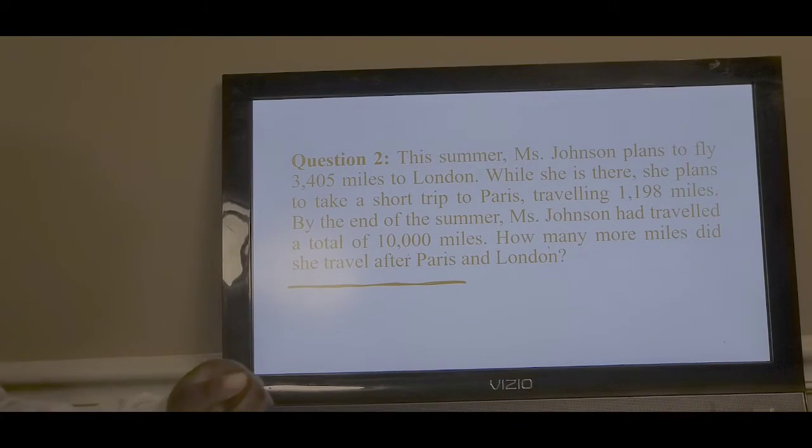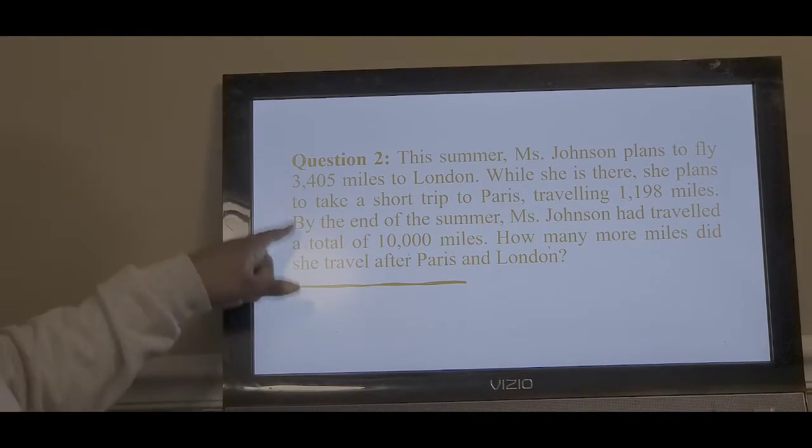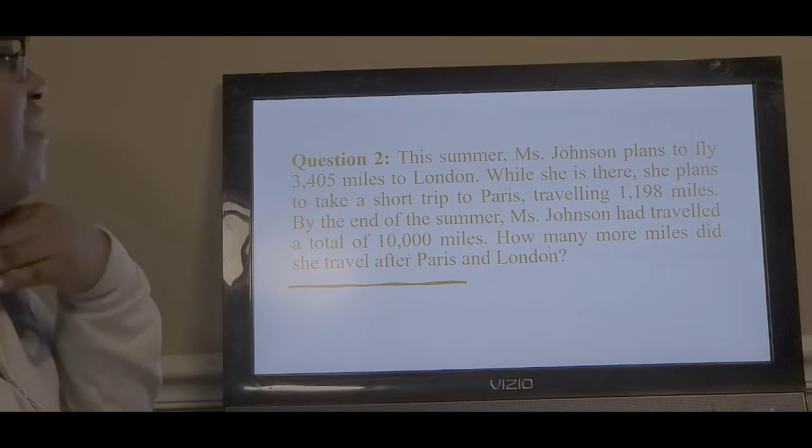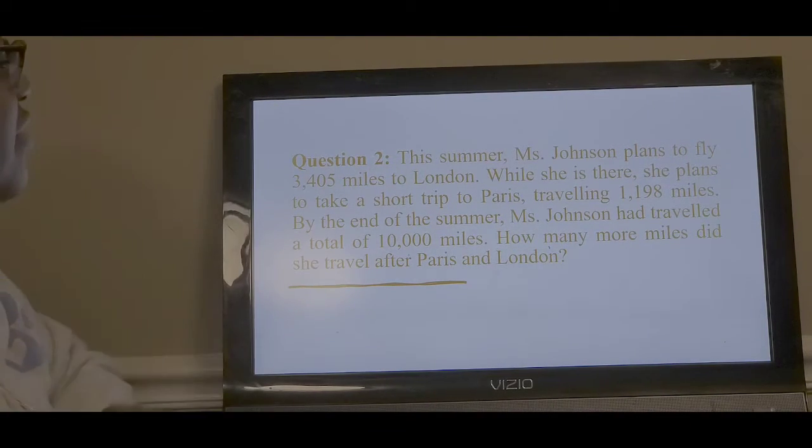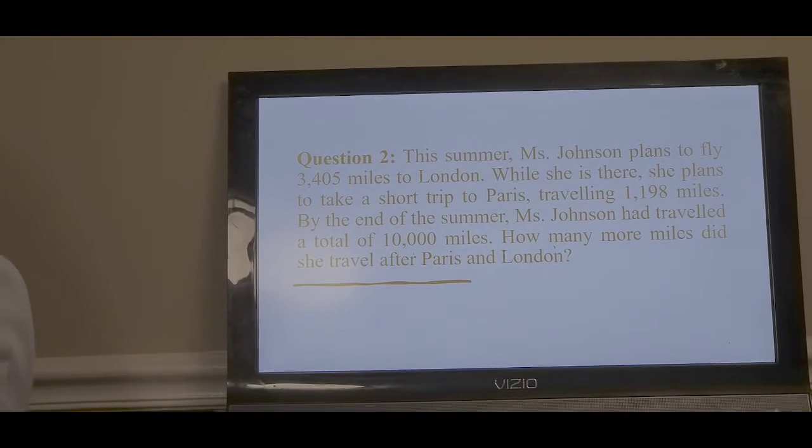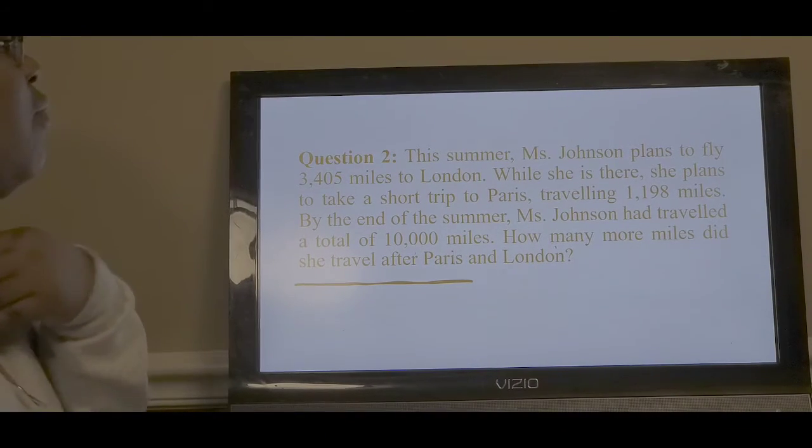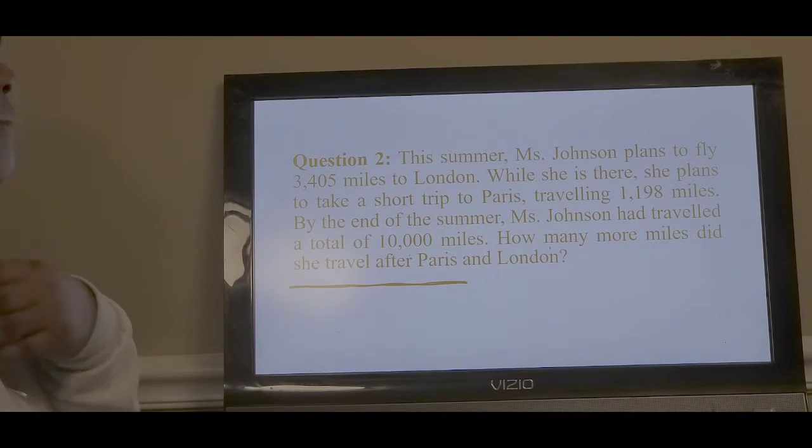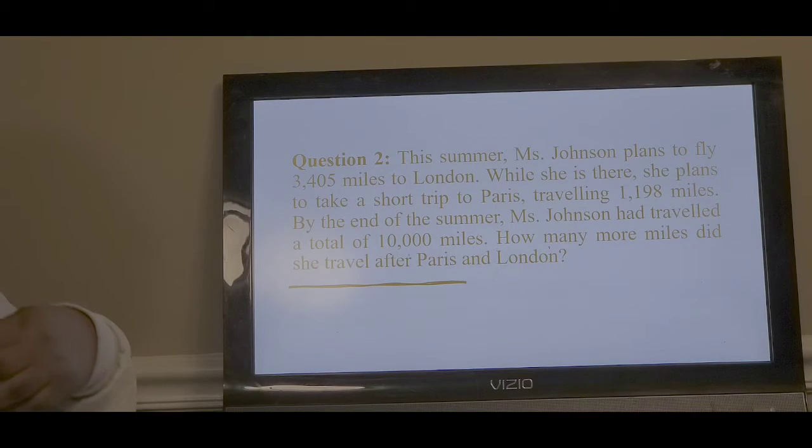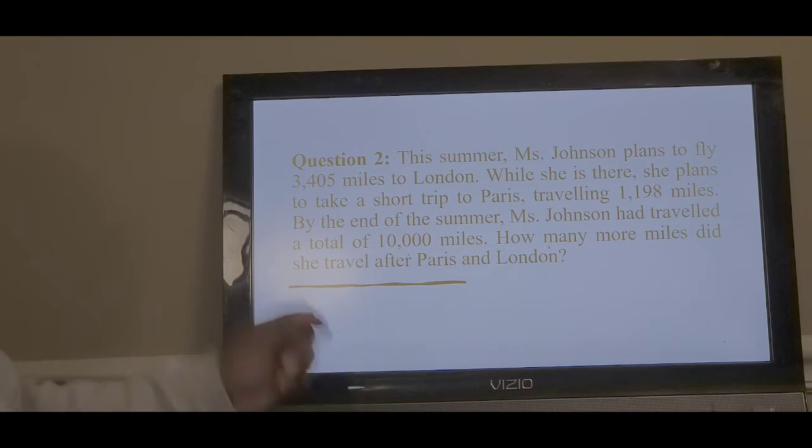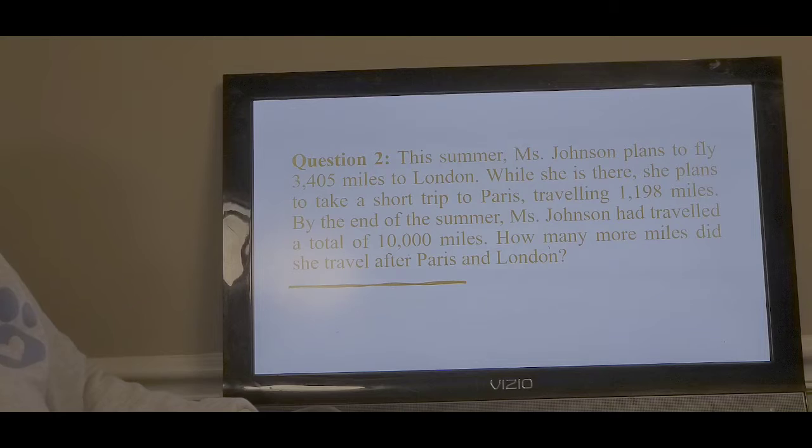Moving on to question 2. This summer, Ms. Johnson plans to fly 3,405 miles to London. While she's there, she plans to take a short trip to Paris, traveling 1,198 miles. By the end of the summer, Ms. Johnson has traveled a total of 10,000 miles. How many more miles did she travel after Paris and London?